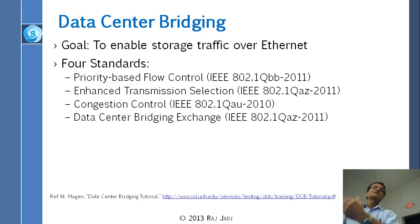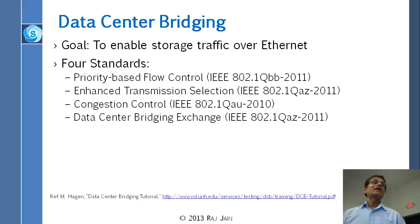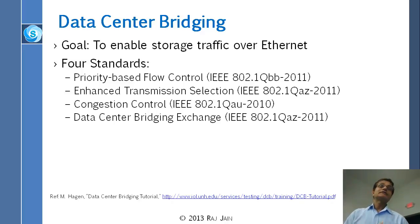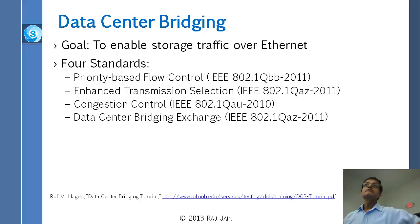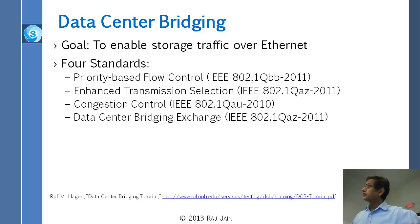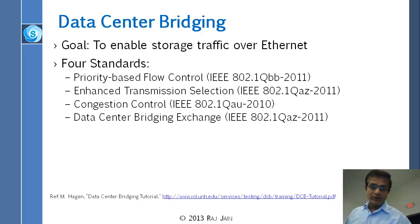Storage is the next module, where we will talk about Fiber Channel, which is what you don't use at home but what is used in data centers. It has certain things, and one of the things it has is it doesn't lose packets. So, anyway, four standards: priority-based flow control, enhanced transmission, congestion control, and data center bridging exchange. I'm going to go through them one by one.